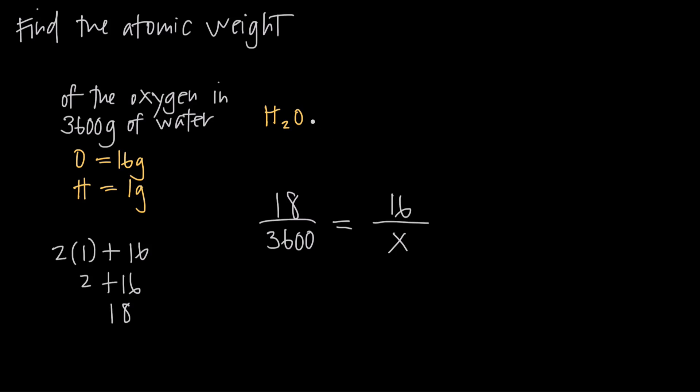In other words, you could say it this way. If oxygen is 16 grams of the total 18 grams in one molecule, so if in one molecule it's 16 out of every 18, how many is it in 3,600?